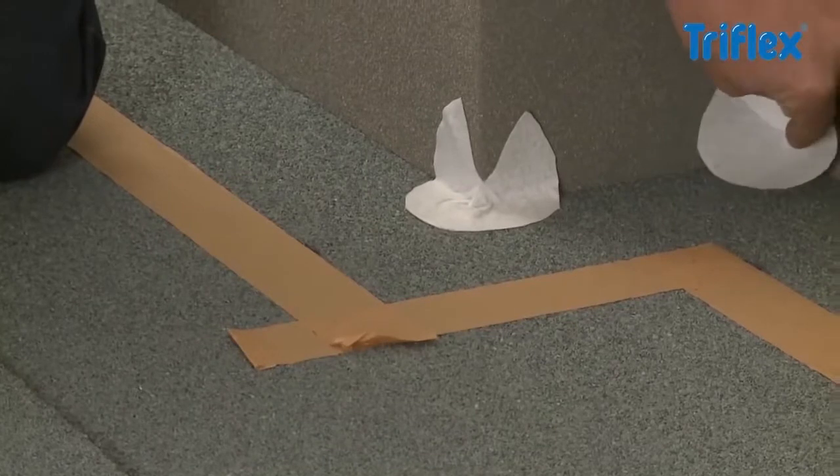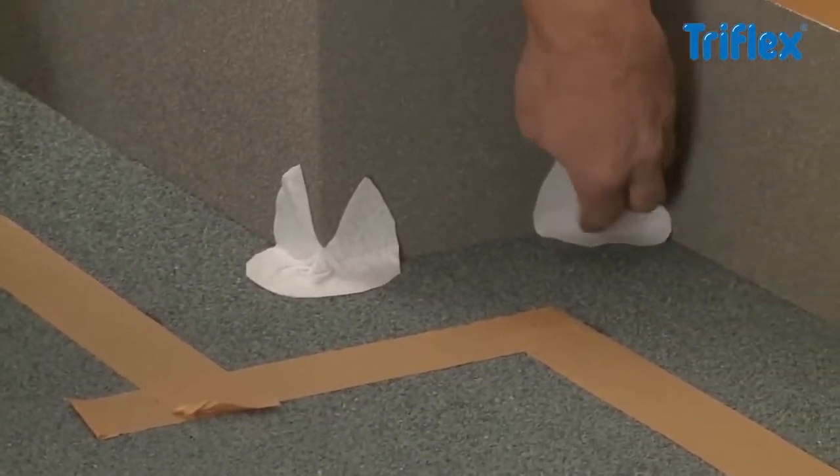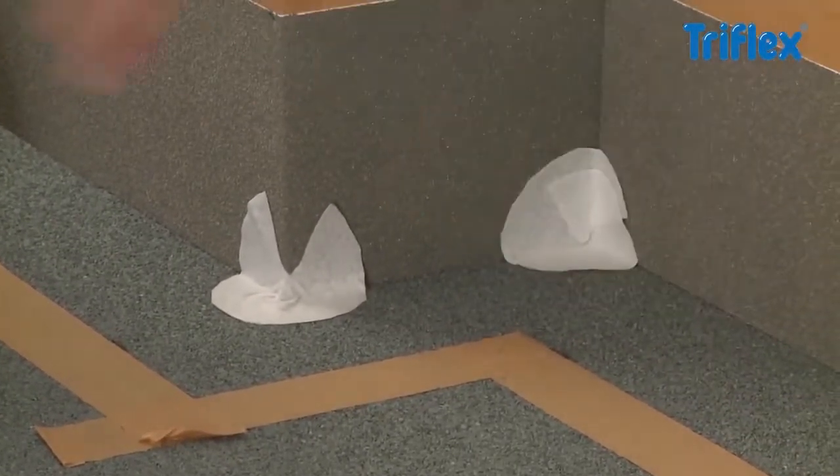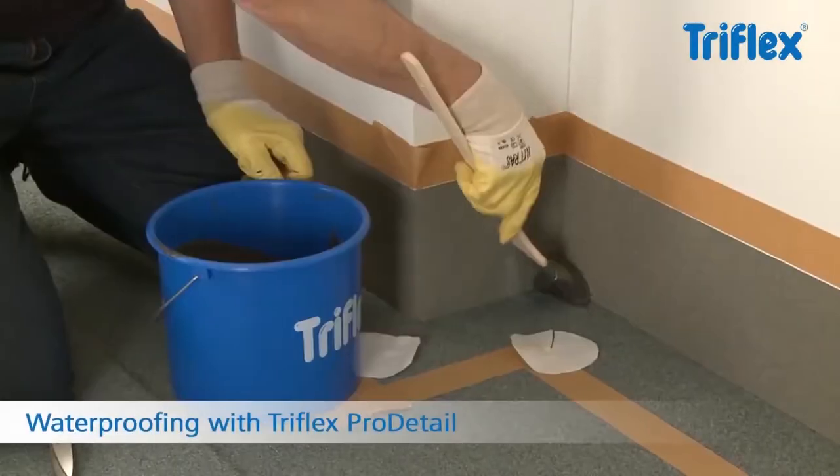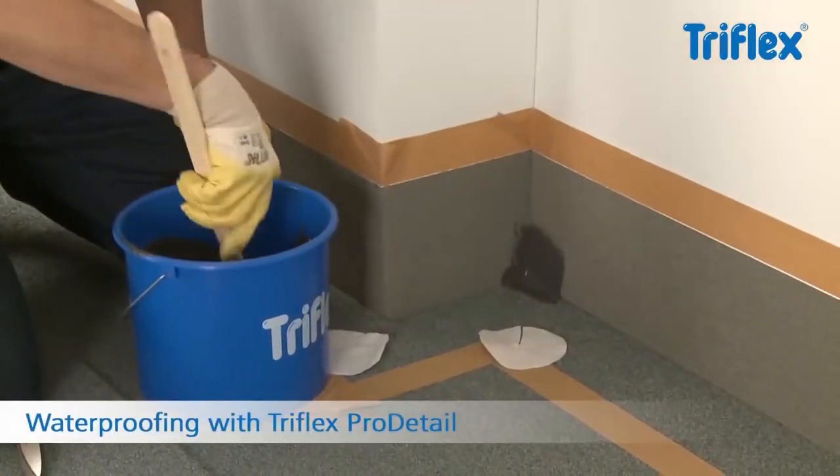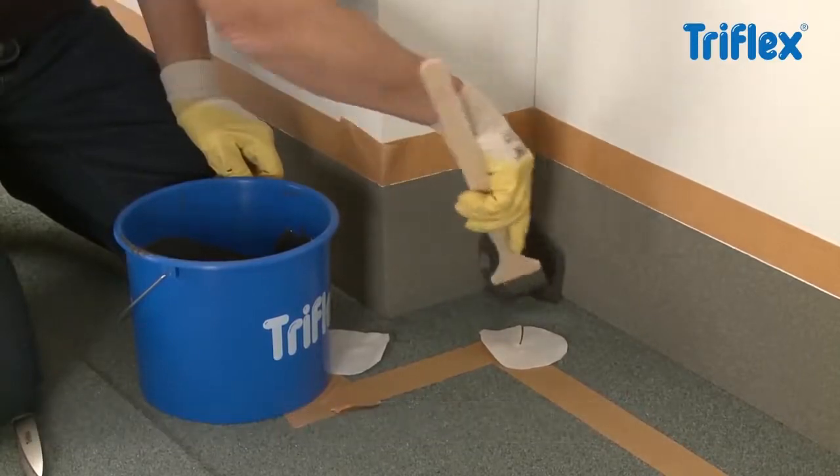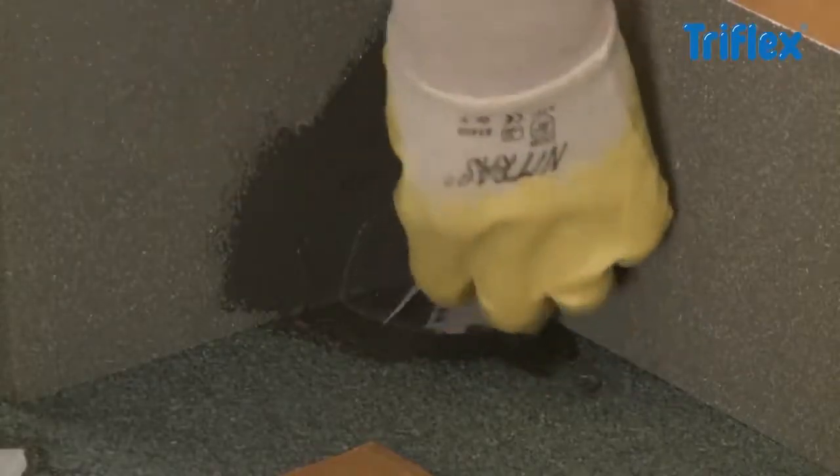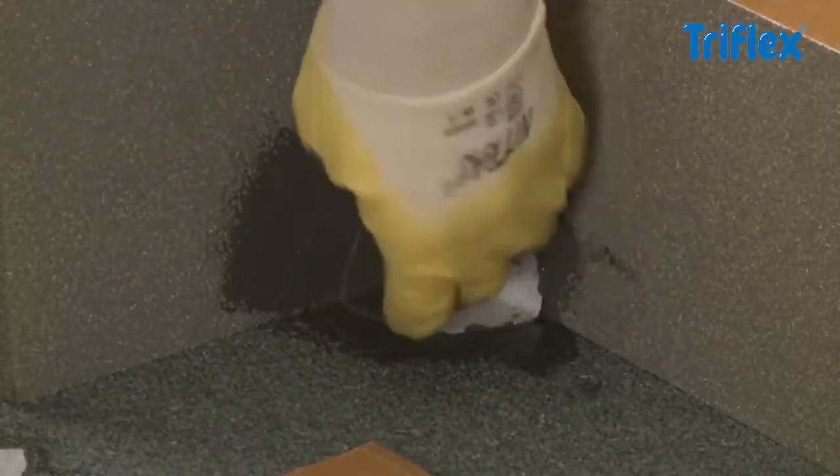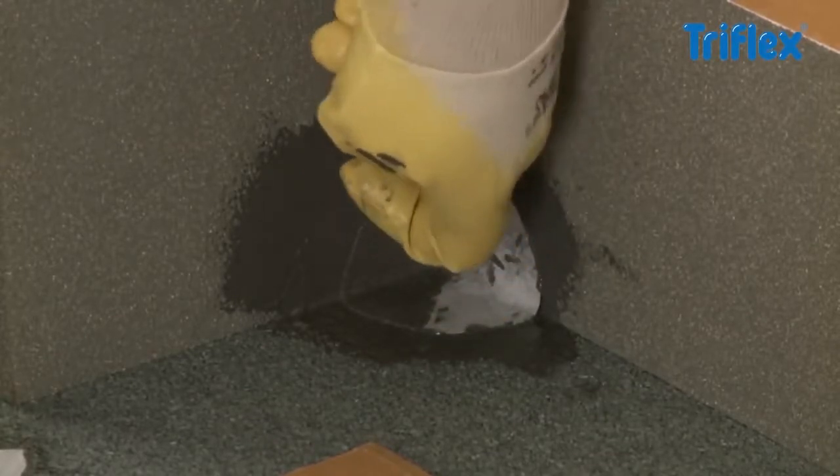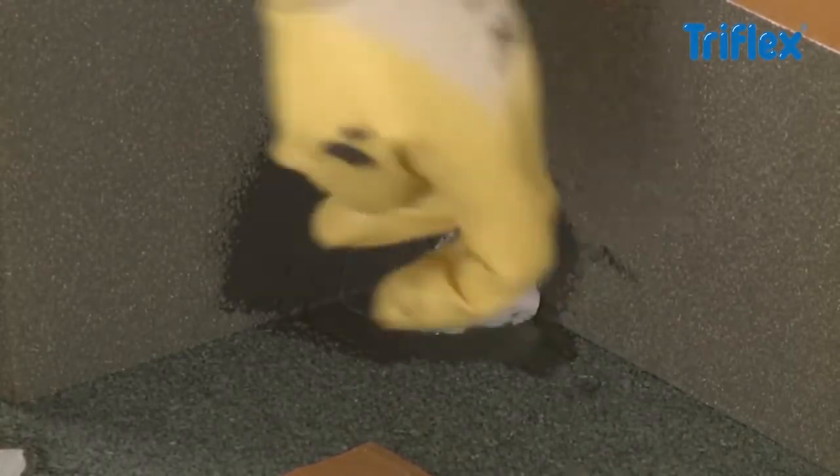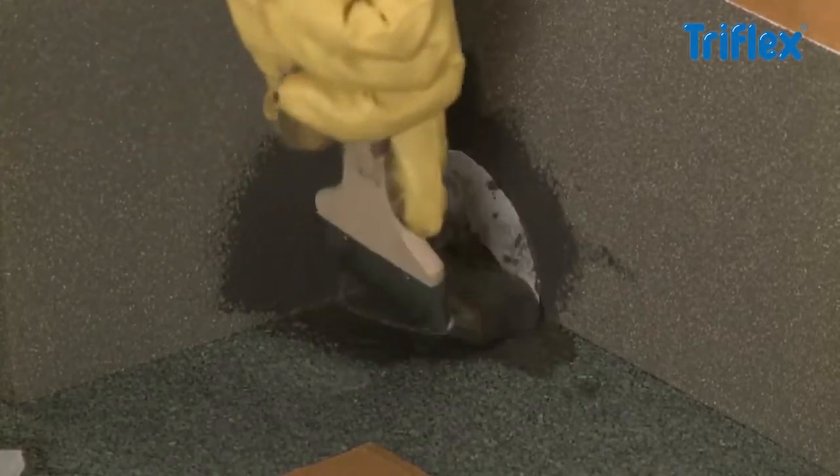Check the prepared fleece cutouts fit into the inner and outer corners. Apply Triflex Pro Detail thickly to a corner using a brush. Position the cutout fleece into the resin, making sure there is no trapped air bubble. Make sure there are no dry areas where the fleece overlaps. Now apply another layer of Triflex Pro Detail to the corner.